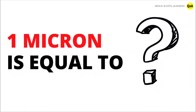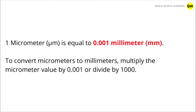Hello everyone. In this video we will discuss: 1 micron is equal to 1 micrometer. Here, 'mu' means micro and 'm' means meter. So 1 micrometer is equal to 0.001 millimeter (mm).